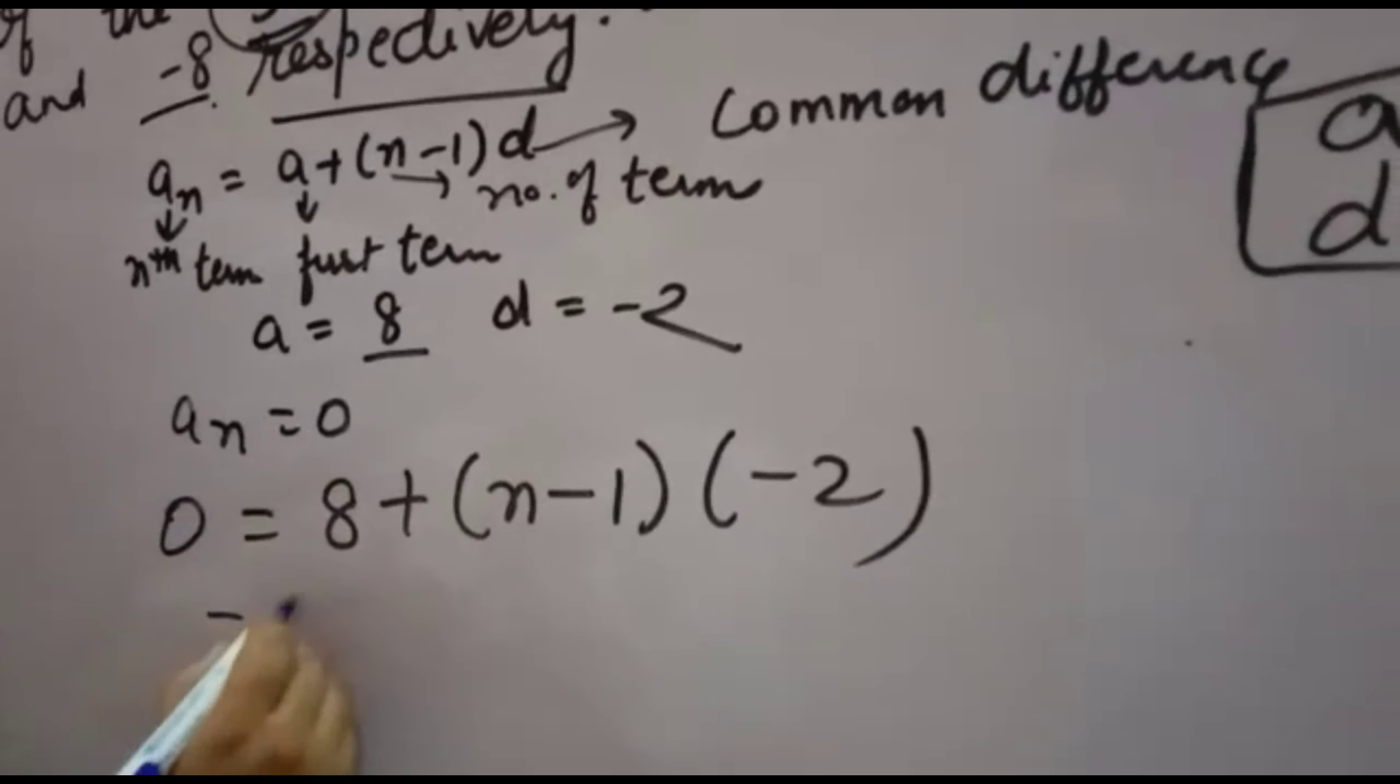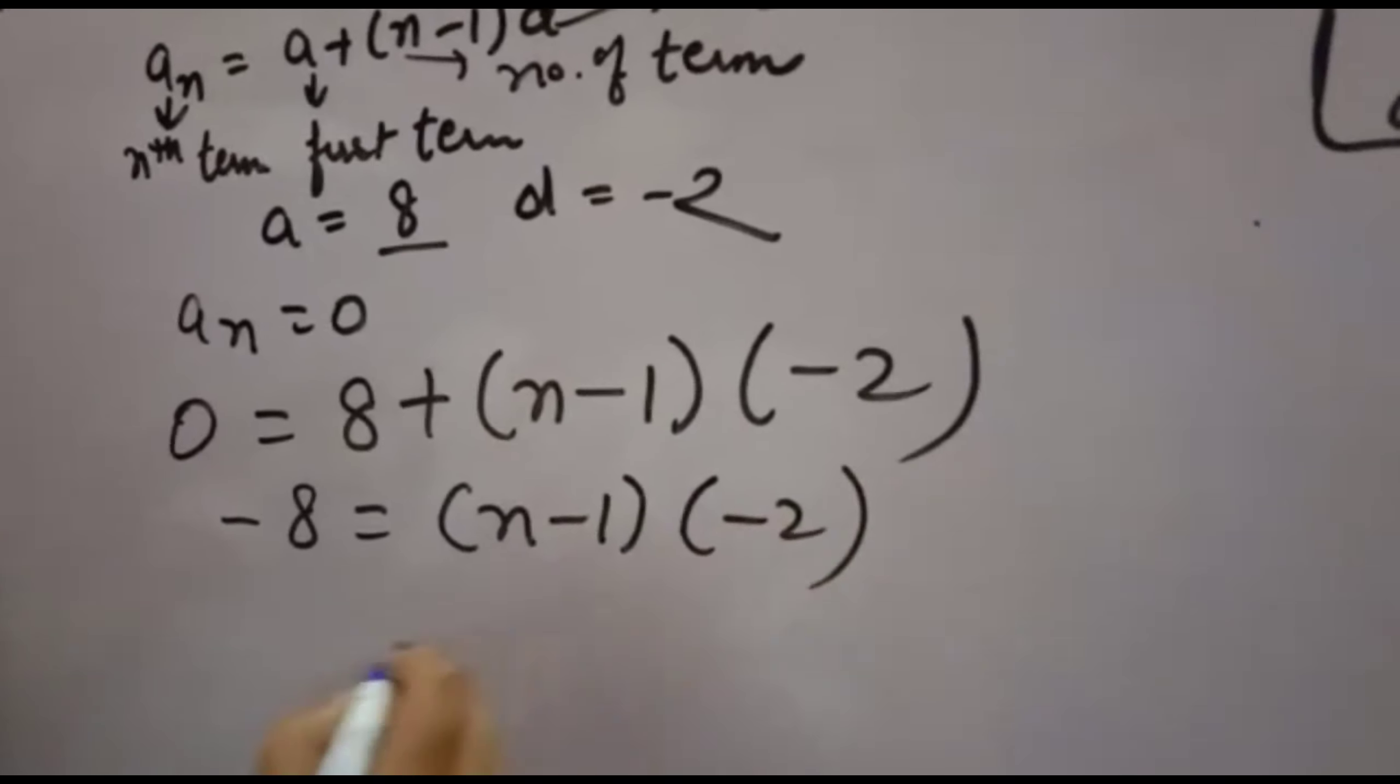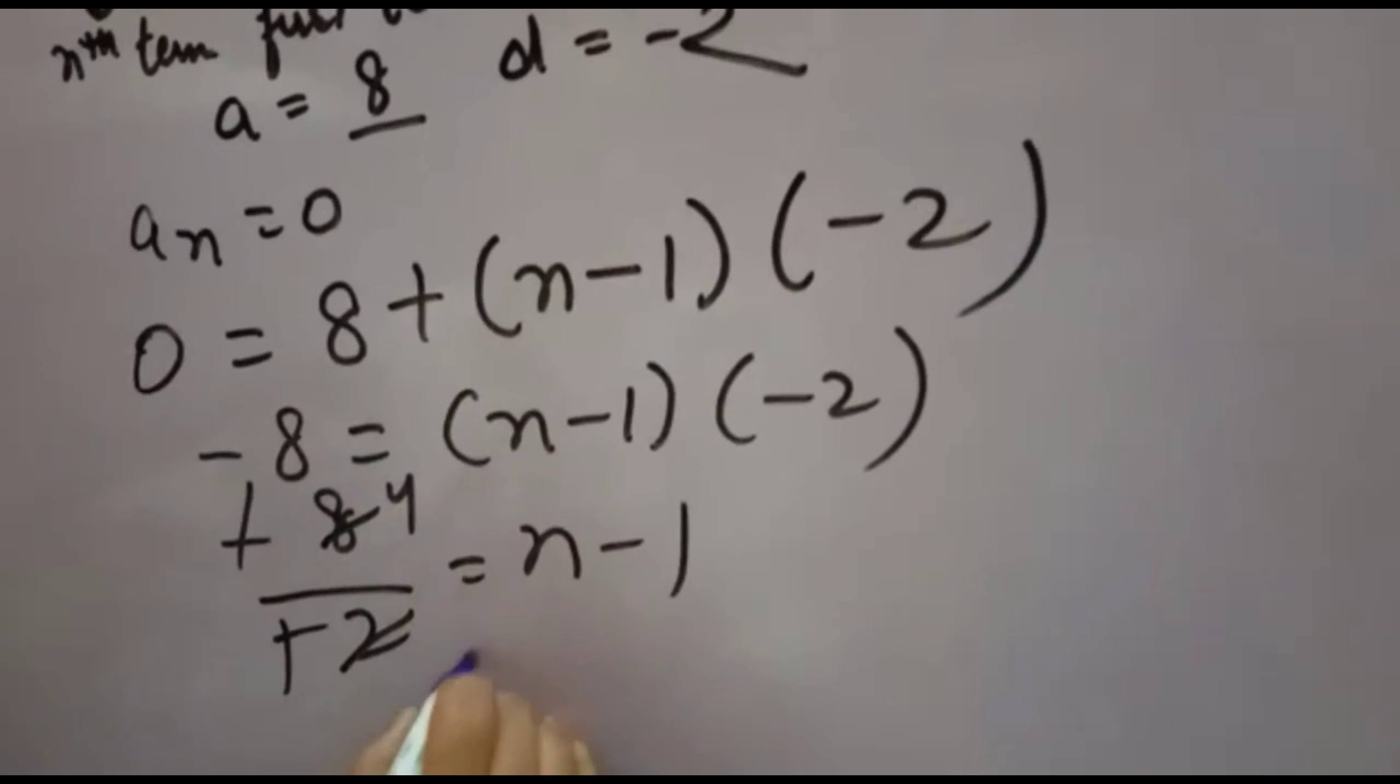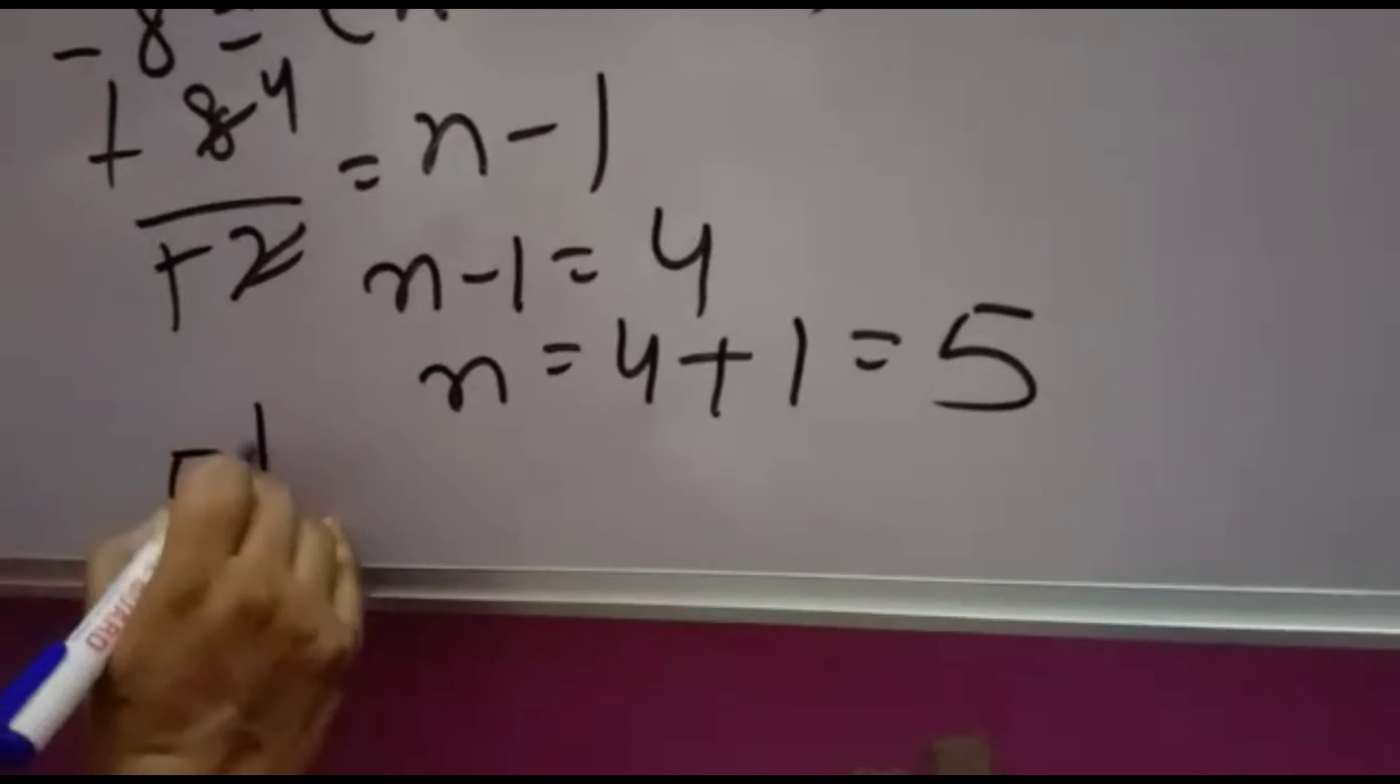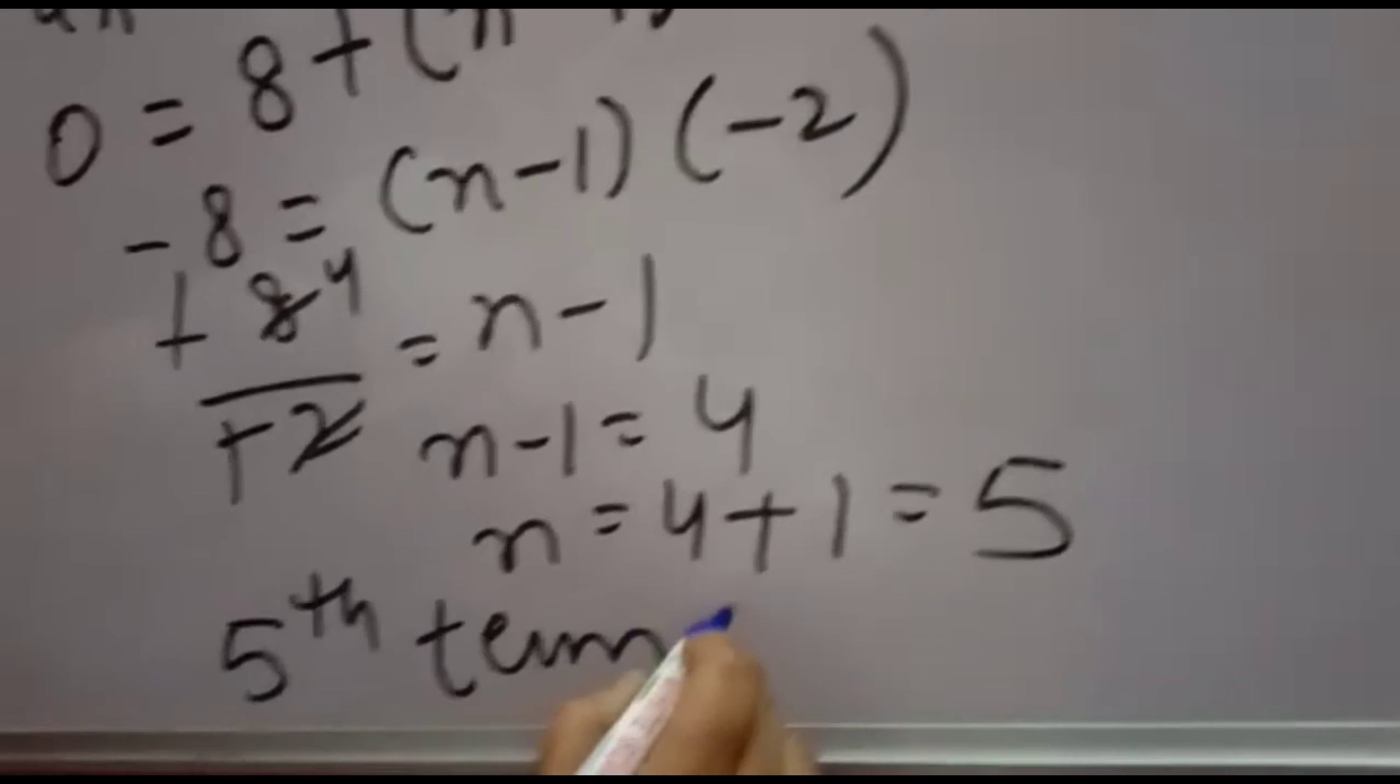Moving 8 to the other side: -8 = (n-1)(-2). Dividing both sides by -2: -8/-2 = n-1, so 4 = n-1. Therefore n = 5. The answer is the 5th term equals 0.